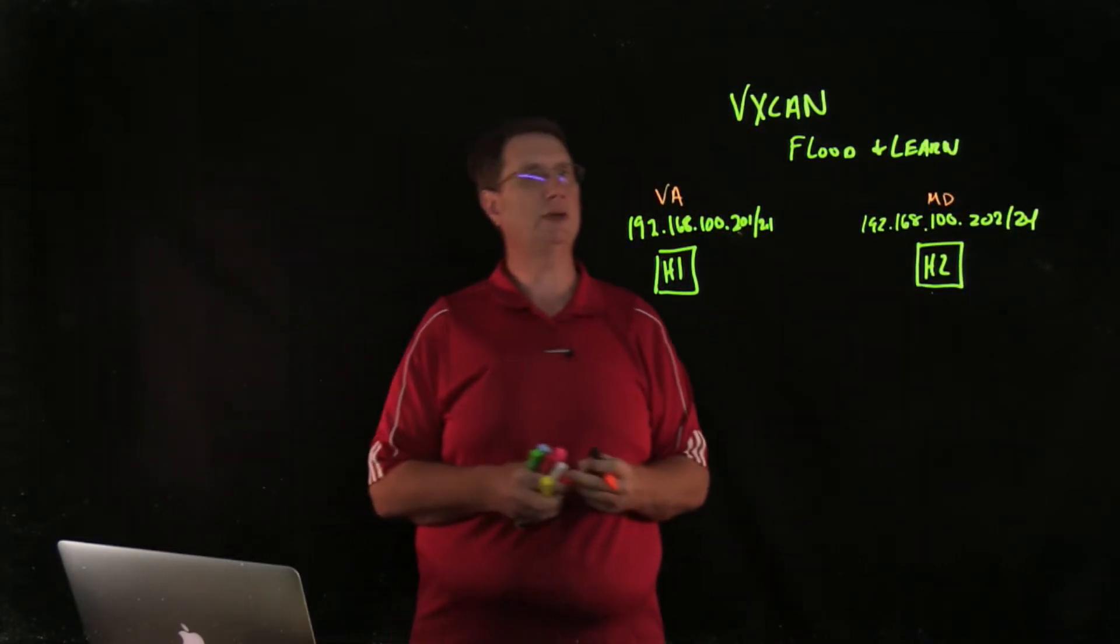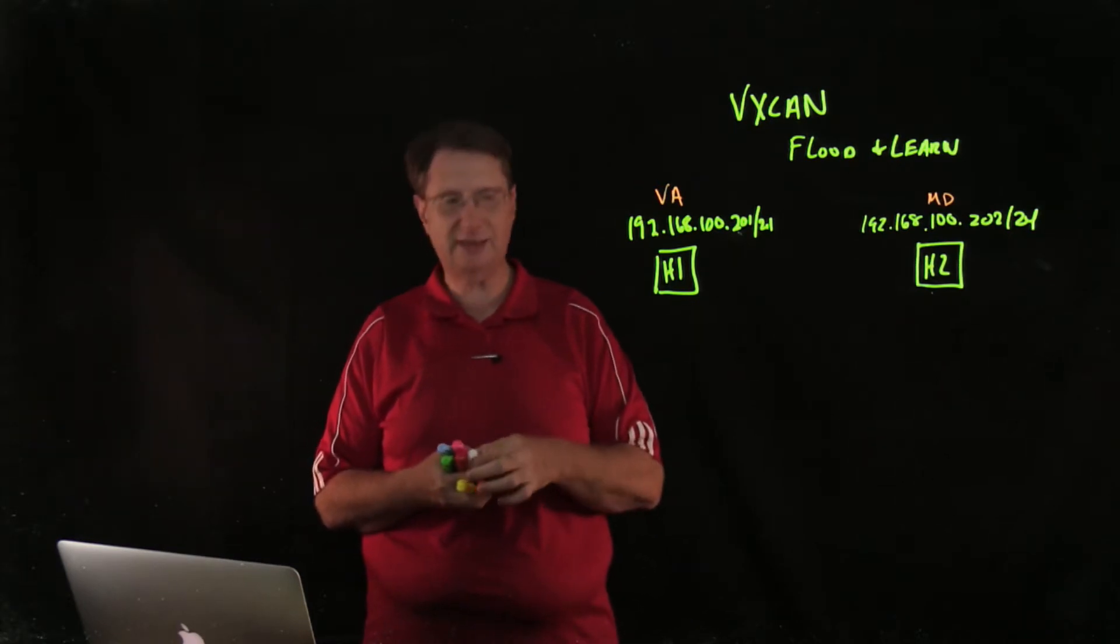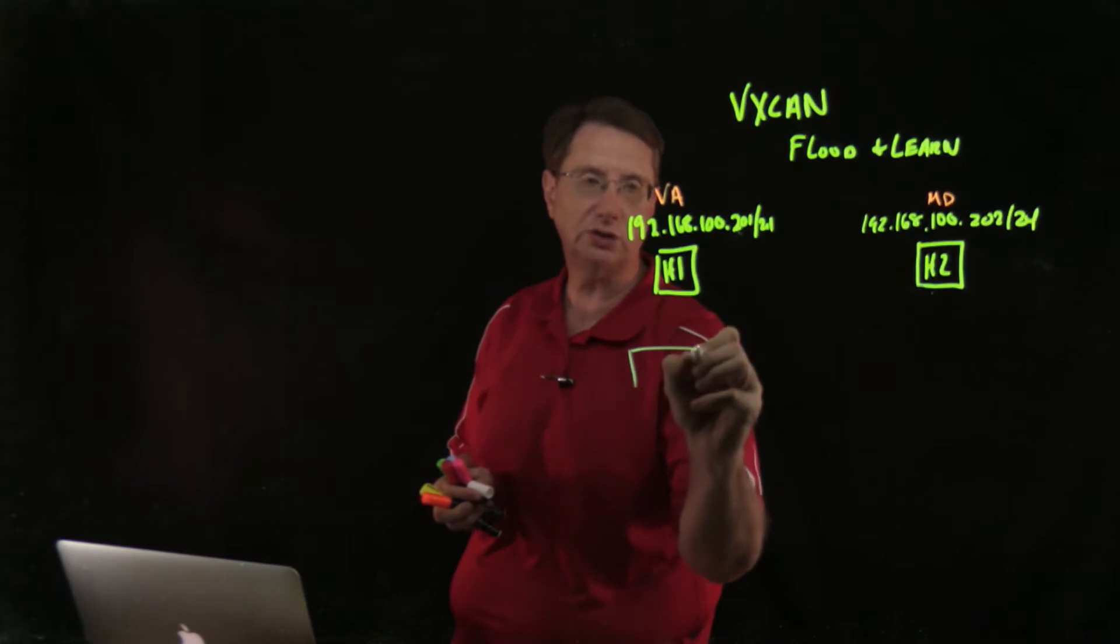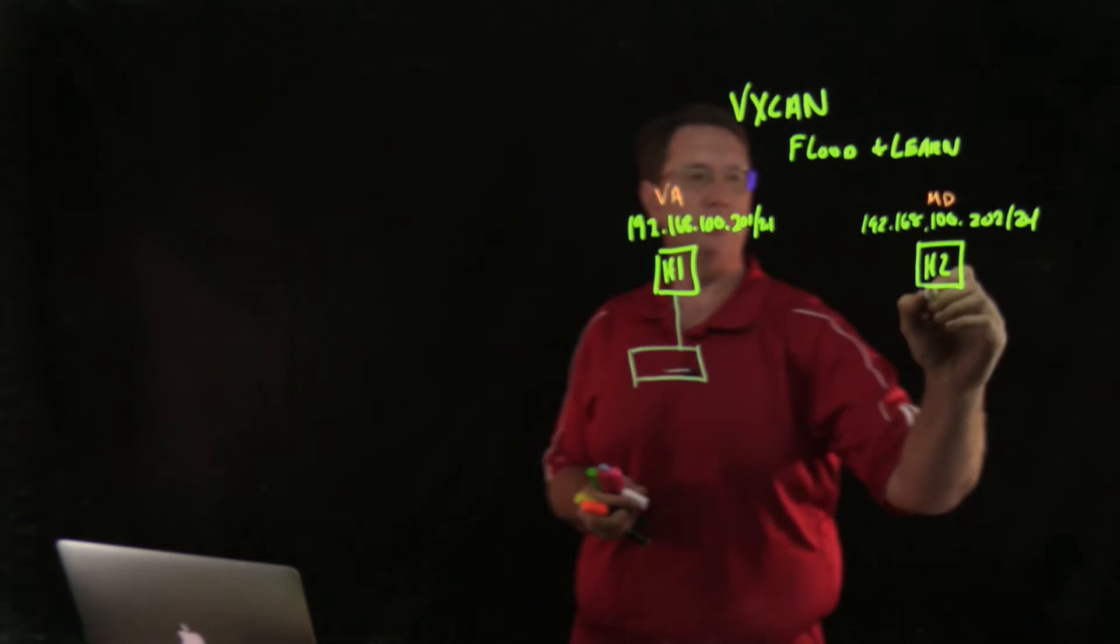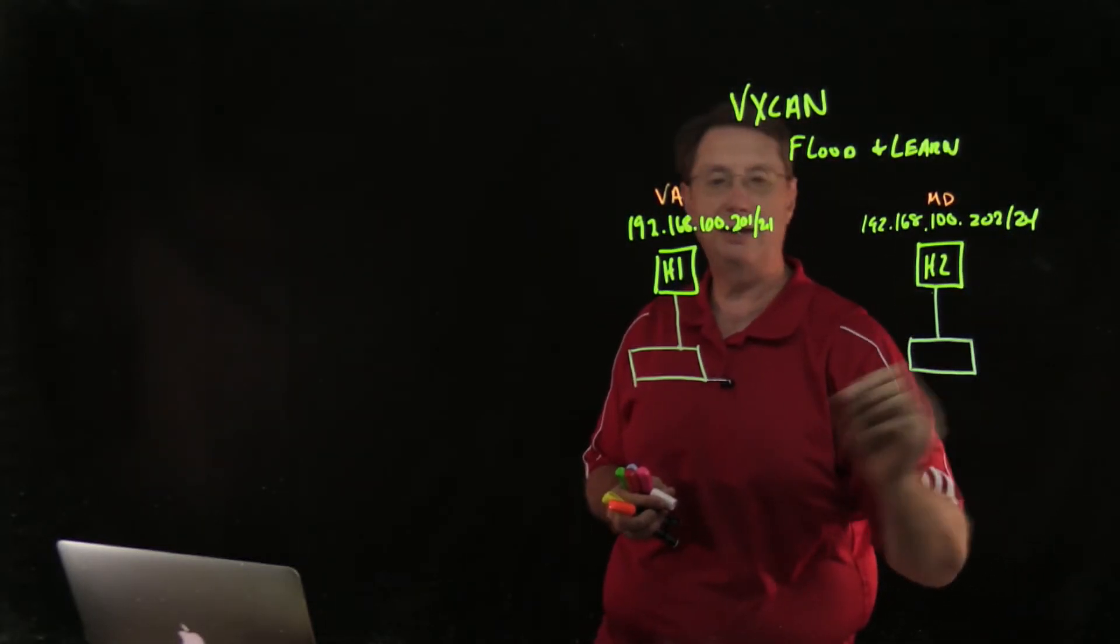What I want to do is create a mechanism that allows me to take this host connected to a network resource in Virginia and this host connected to a network resource in Maryland.